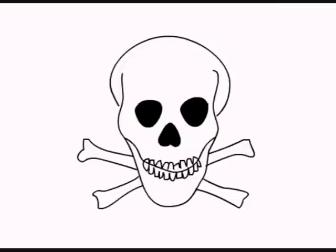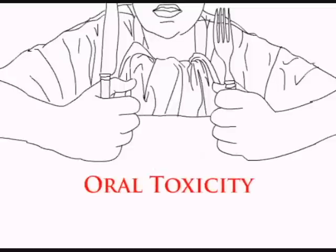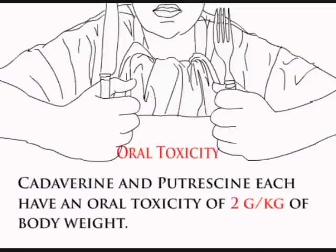Each of the compounds is bad for you when consumed in high doses. This is called oral toxicity. Cadaverine and putrescine have an oral toxicity of two grams per kilogram of body weight.